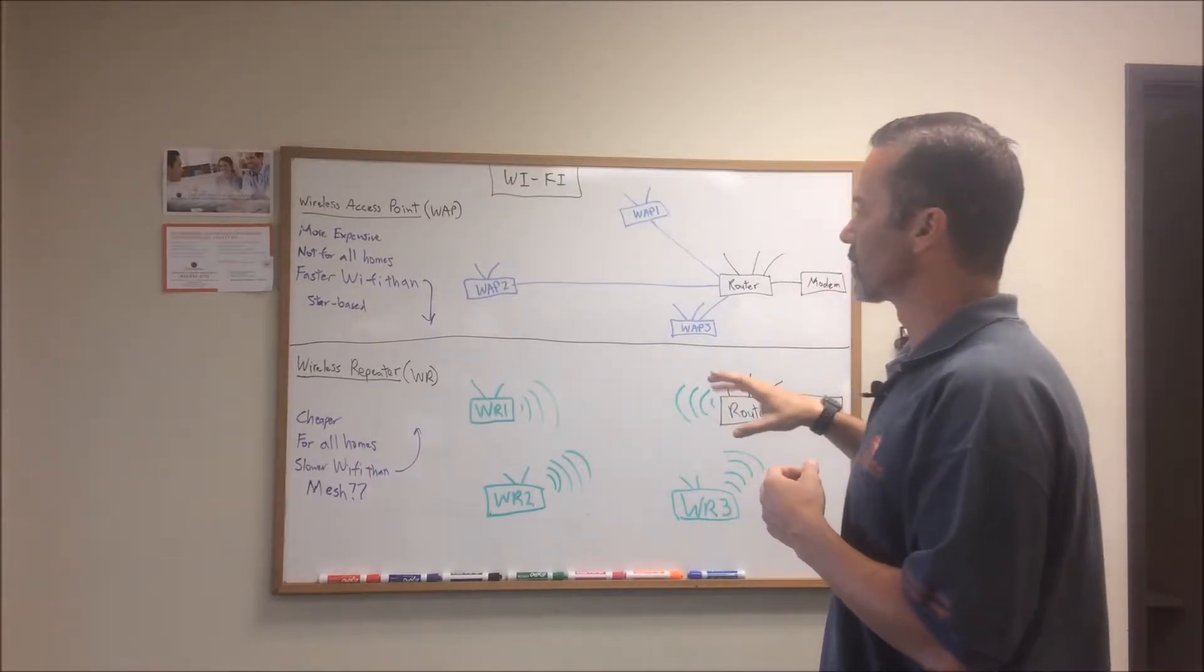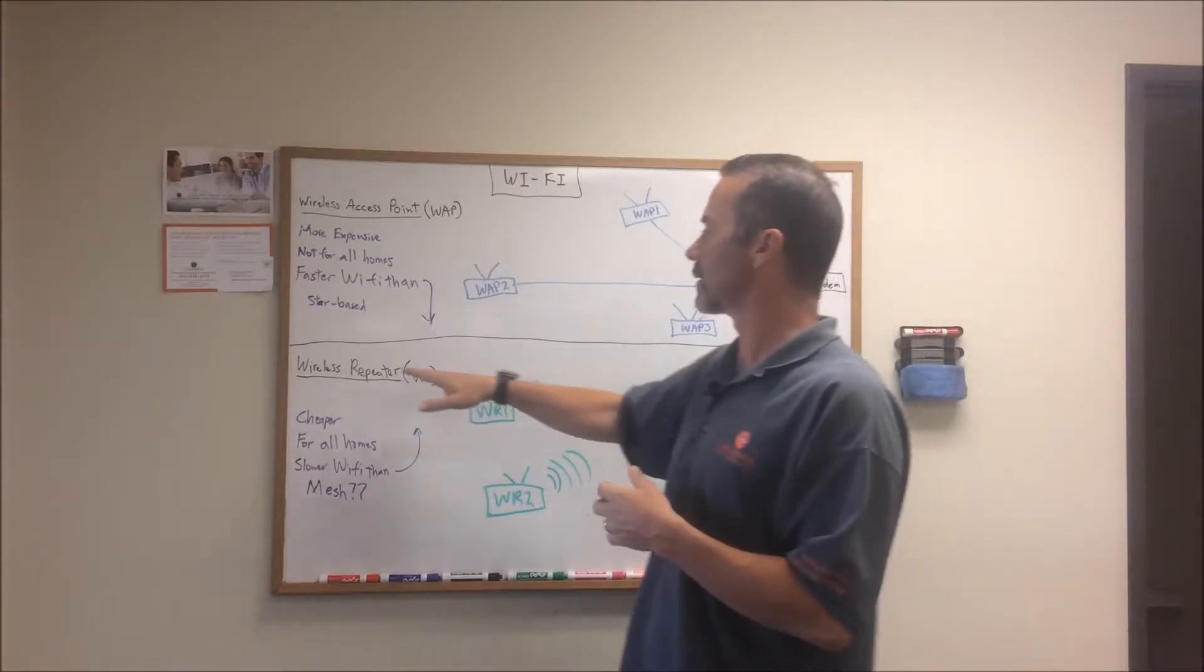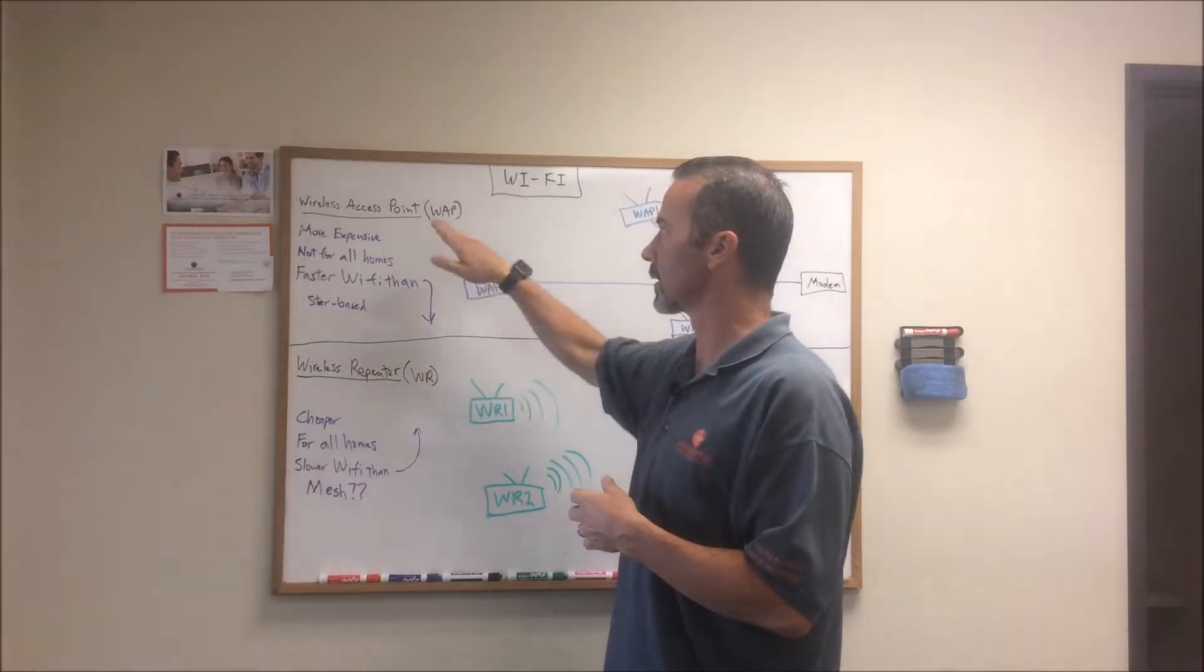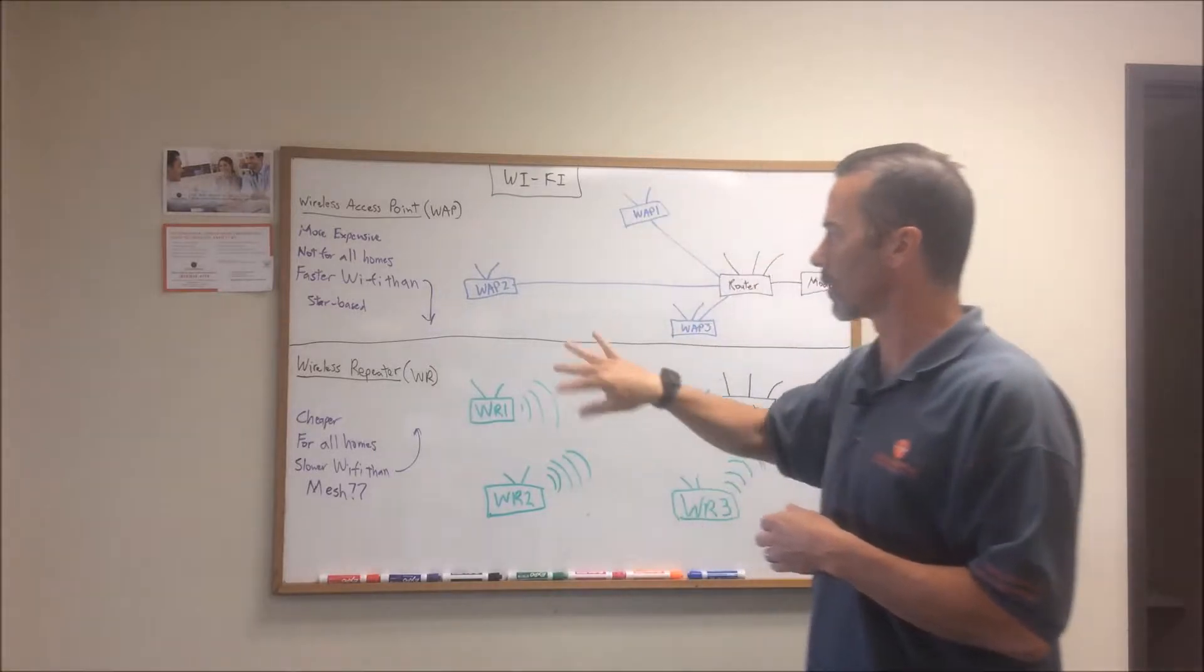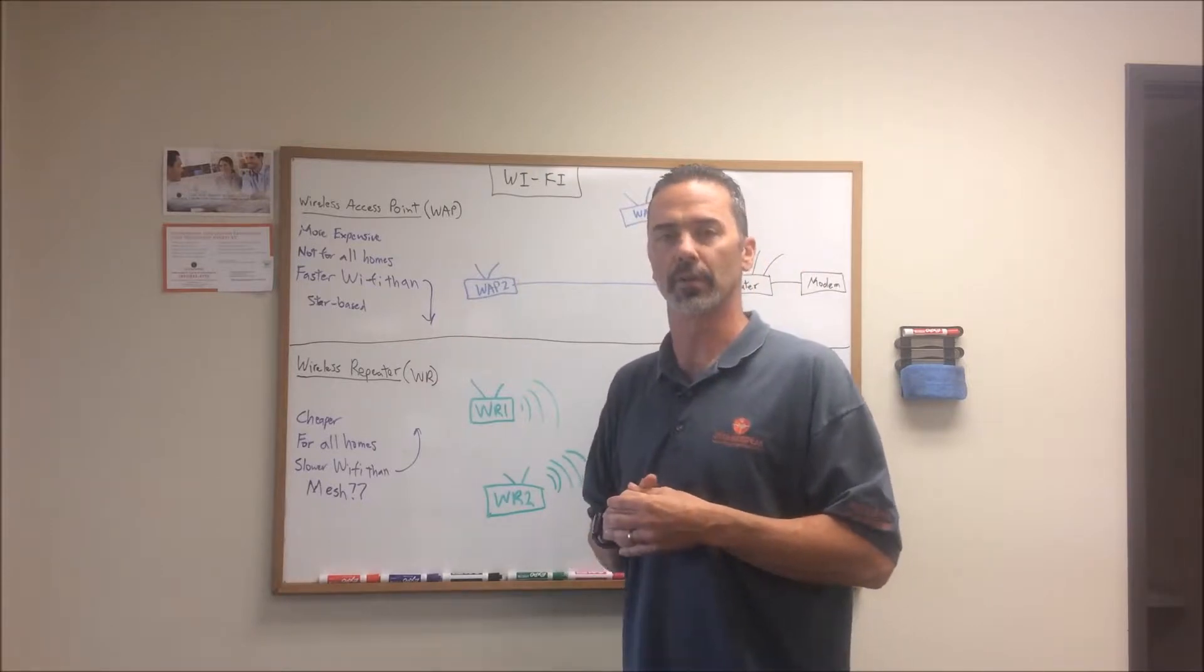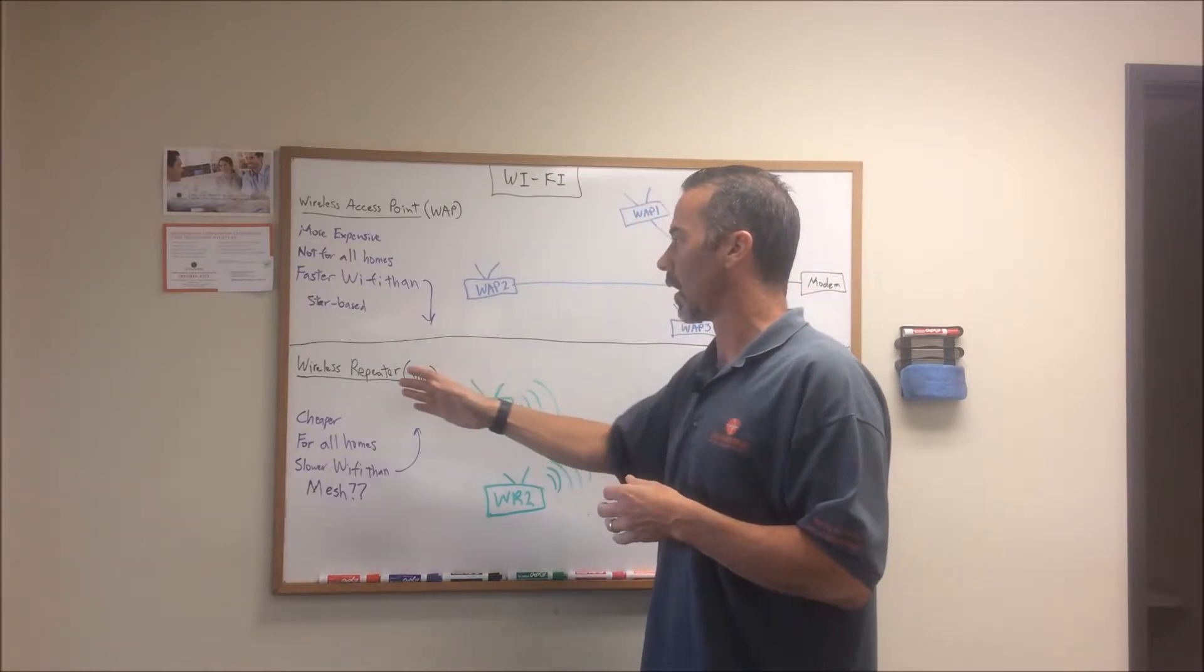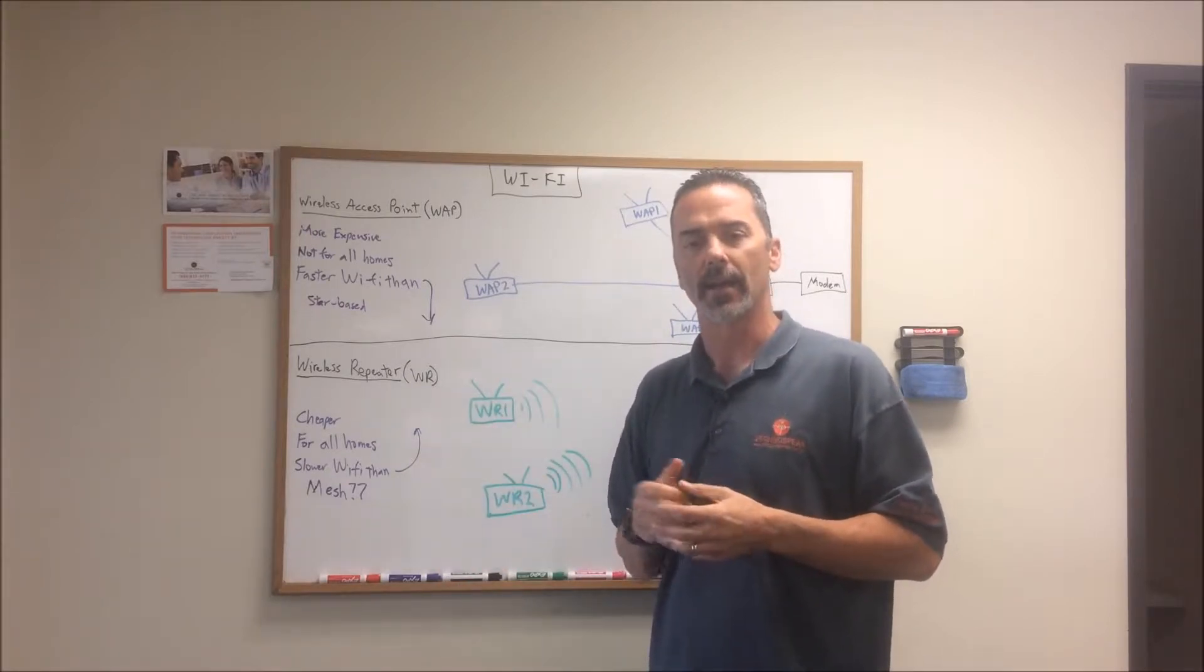So there's basically two different ways to deploy Wi-Fi in your home. One is using wireless repeaters and the other is using wireless access points. We are going to be talking about the repeaters first because that's the one the end user is most commonly going to see.